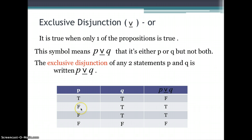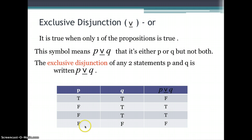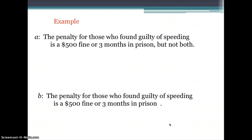When the first statement is false and the second is true, P or Q is true. When the first is true and the second is false, P or Q is true. When both are false, P or Q is false.